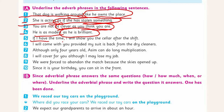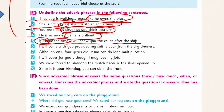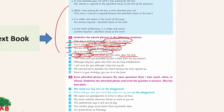Sentence 5: 'If I have the time, I will show you the cellar after the shift.' The adverbial phrase is 'if I have the time.' Notice the comma after the adverbial phrase because it comes at the front of the sentence. Sentences 6 to 10 are your home task.